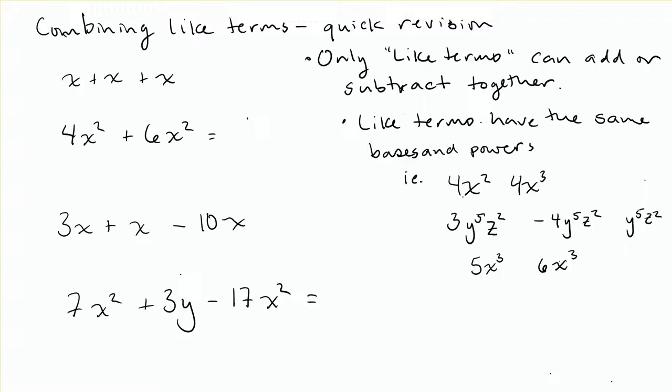So for instance, 4x squared and 4x to the third power. We cannot add these together, they are not like terms, because that's x squared and this is x cubed, so not alike.